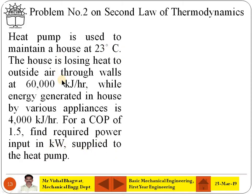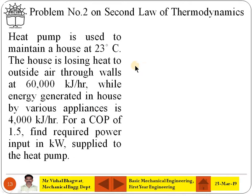One must understand which kind of device this is — is it a heat engine, heat pump, or refrigerator? Here it is clearly stated that a heat pump is used to maintain the temperature of the house at 23 degrees Celsius, and there is a problem of heat leakage. So we have to solve this numerical for a heat pump.